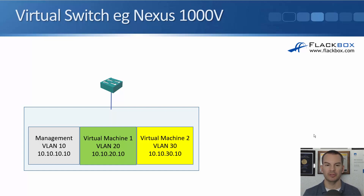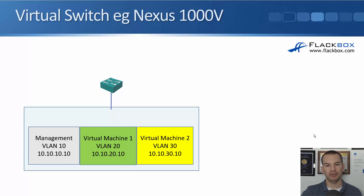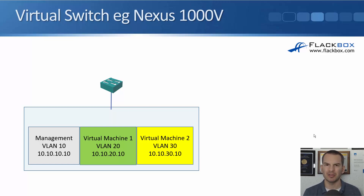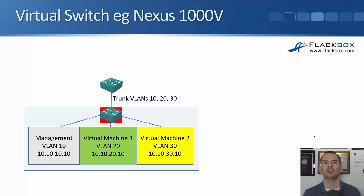The problem is that this one physical box is connected to the physical switch with a single cable. When traffic comes down to that host, how does it know whether to send it to the management IP, virtual machine 1, or virtual machine 2 — each in different VLANs? The solution is a virtual switch — a switch running in software inside the host.